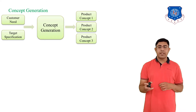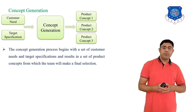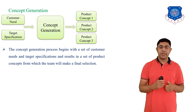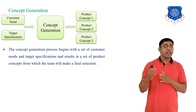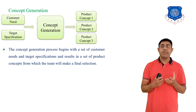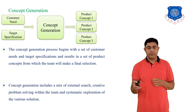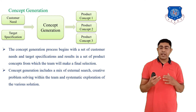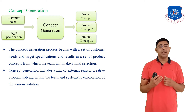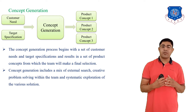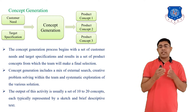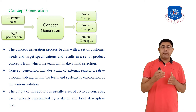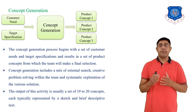The concept generation process begins with the set of customer needs and target specifications, as shown in the figure. The result is a set of product concepts from which the team selects the final concept. Concept generation includes a mix of external research, creative problem solving within the team, and systematic exploration of various solutions. The output is mainly a set of 10 to 20 concepts, each represented by a sketch and brief descriptive text.